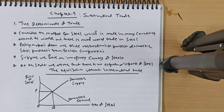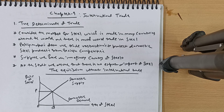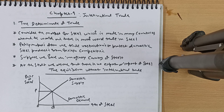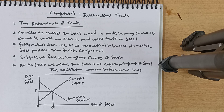Welcome friends, Chapter 9: International Trade. The first topic is determinants of trade. Consider the market for steel, which is made in many countries around the world and there is much world trade in steel. Policymakers often use trade restrictions to protect domestic steel producers from foreign competitors — China is one of them.